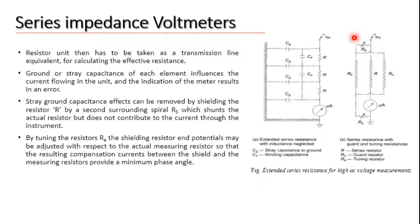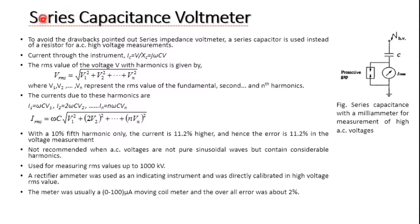To overcome the limitations of the series impedance voltmeter, we use a series capacitance voltmeter. In place of the high voltage resistance, a capacitor is used; the protective device and microammeter remain the same. To avoid the drawbacks of the series impedance voltmeter, series capacitance is used instead of resistance. The current through the capacitor is I_c = V / X_c, so V = I_c × X_c, which can also be written as I_c = jωC × V.